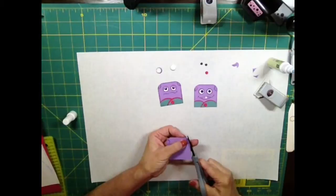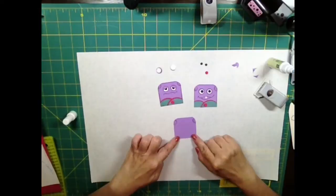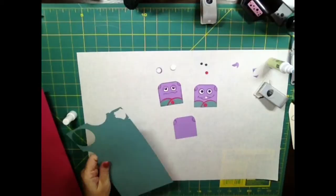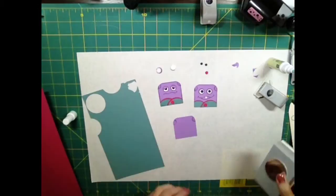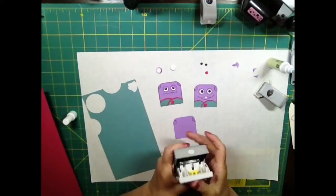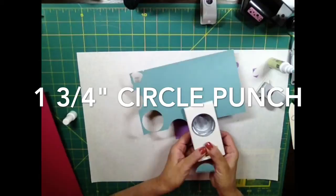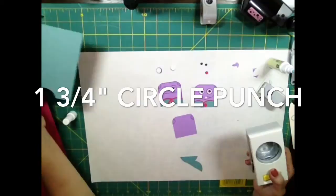Then I add the outfit for the O. The outfit will be - I use 1 and 3/4 circle punch. I just punch maybe just less than a half circle, and then two of them.